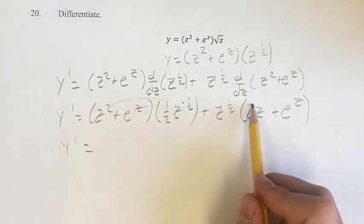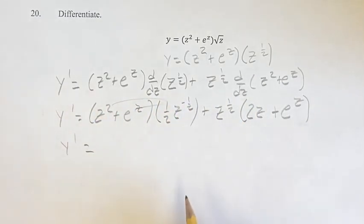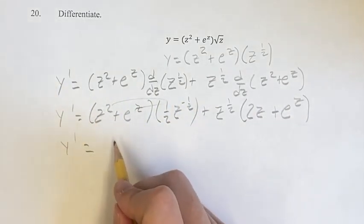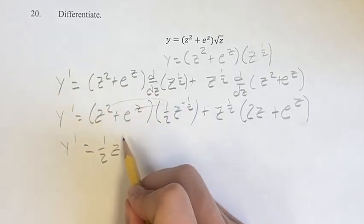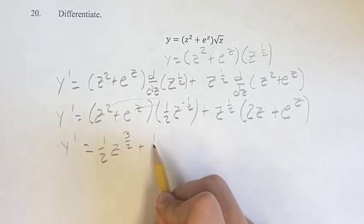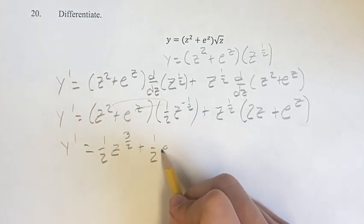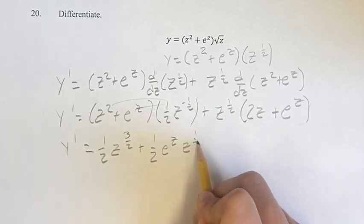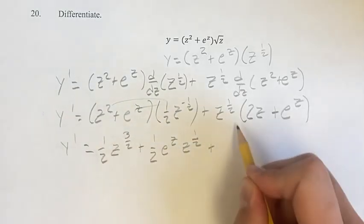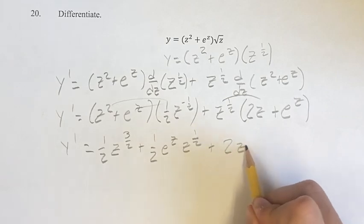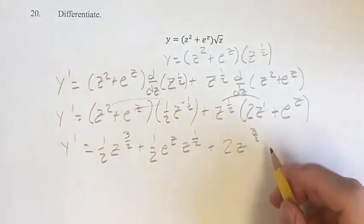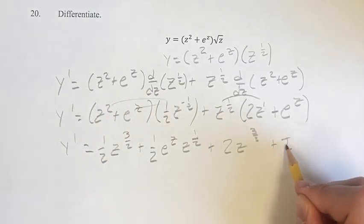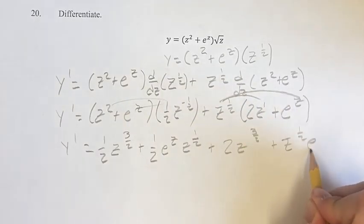Therefore, factoring these out, we get z squared times z to the negative one-half. When you're multiplying terms, you add their exponents, so two minus one-half, so we have one-half, don't forget the coefficient, times z to the three-halves plus one-half e to the z, z to the negative one-half plus two z to the one-half plus one is three-halves plus z to the one-half times e to the z.